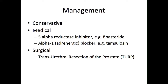Medical treatment involves the use of 5-alpha-reductase inhibitors, such as finasteride, and alpha-1-adrenergic blockers, such as tamsulosin. 5-alpha-reductase inhibitors act by inhibiting the enzyme that converts testosterone into dihydrotestosterone, which is required by the prostate for continued hyperplasia. Therefore, failure to produce dihydrotestosterone will lead to a decrease in the size of the prostate gland.